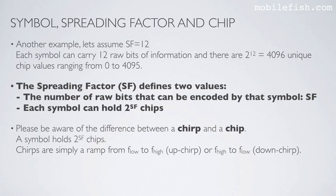Please be aware of the difference between chirp and chip. A symbol holds 2 to the power of SF chips and chirps are simply a ramp from F low to F high, meaning up chirps, or F high to F low, meaning down chirps. It is very important that you understand what symbols, spreading factors, and chips are.